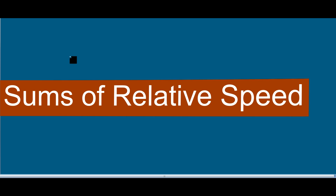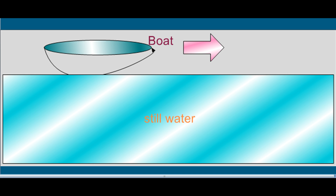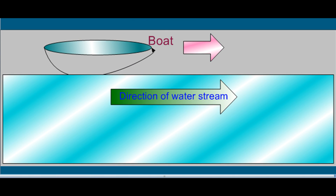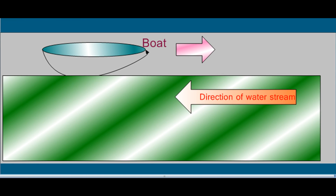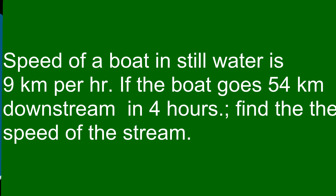In this video I will discuss sums about relative speed. The first sum relates to a boat in still water — sometimes traveling downstream, sometimes upstream against the stream. The question is: the speed of a boat in still water is 9 kilometers per hour. If the boat goes 54 kilometers downstream in 4 hours, find the speed of the stream.